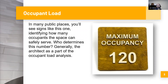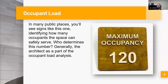As to occupant load, in many public places you'll see signs identifying how many occupants a space can safely serve. Most people have seen signs like this before and understand what they're for. But who determines this number? Generally, it is going to be the architect of record who calculates how many occupants the building or space can serve as part of the occupant load analysis.